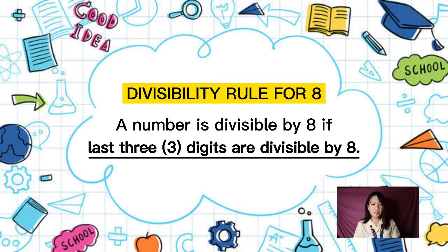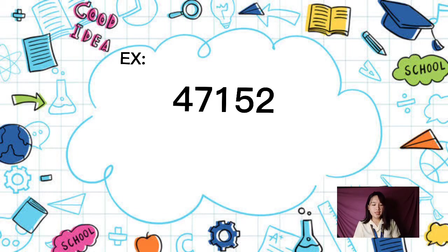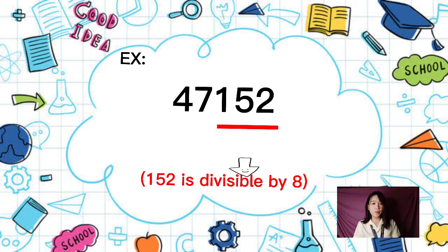A number is divisible by 8 if the last 3 digits are divisible by 8. For example, 47,152: the last 3 digits are 152, which is divisible by 8.